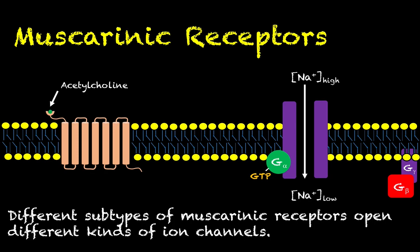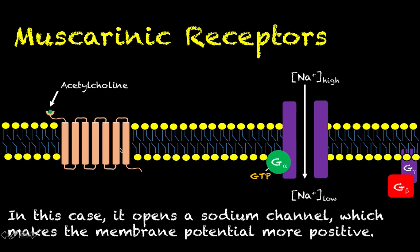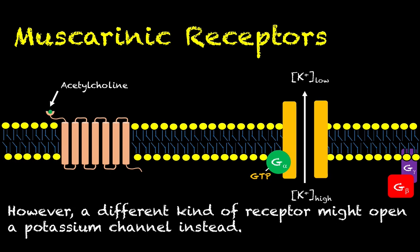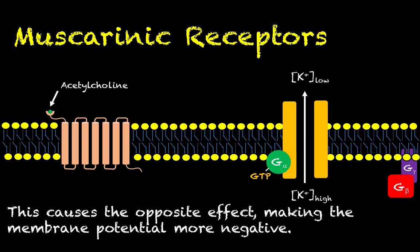Muscarinic receptors come in different varieties or subtypes. This particular subtype opens a sodium channel, which causes the membrane potential of the cell to become more positive. But what if we activated a different kind of muscarinic receptor? If we switch which kind of muscarinic receptor we activate, we could potentially open a different kind of ion channel. In this case, instead of opening a sodium channel, we open a potassium channel. Potassium has a concentration gradient pointed in the opposite direction compared to sodium, so the membrane potential of this cell becomes even more negative than it already was.